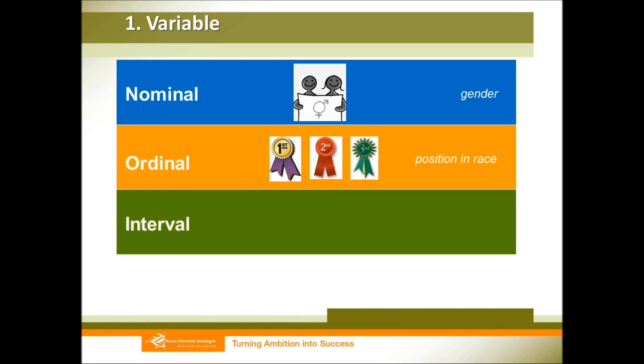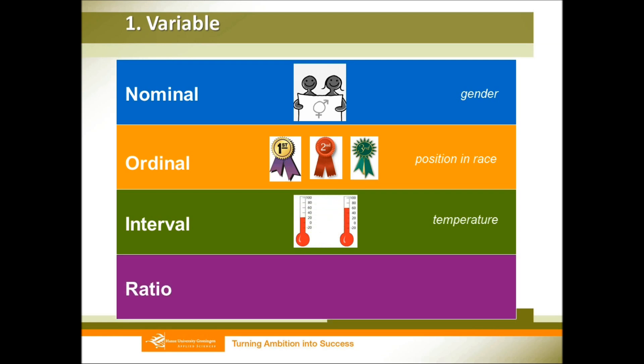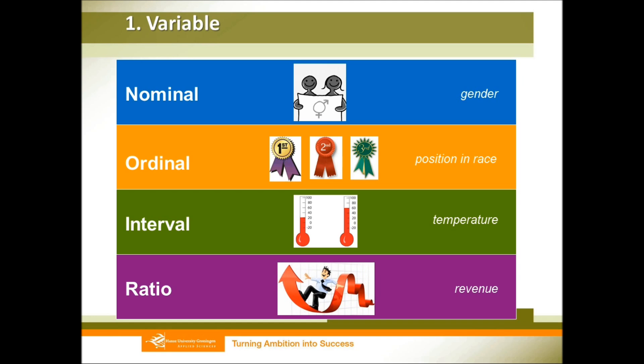The interval variable is about numbers — for example, temperature. Another variable about numbers is ratio — for example, your company's revenue. You may ask: what is the difference between interval and ratio? Both of them are about numbers. The difference is that for an interval variable, you have a zero, but this zero does not have a true zero meaning.